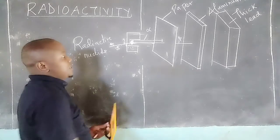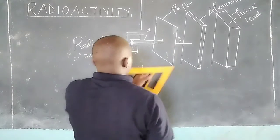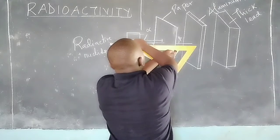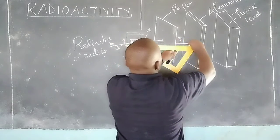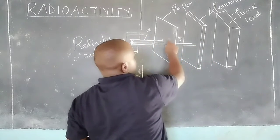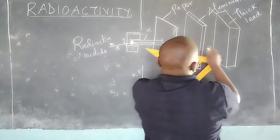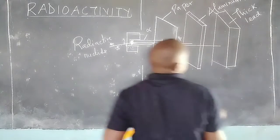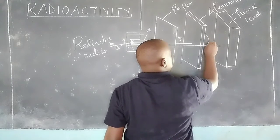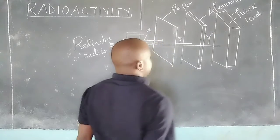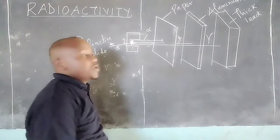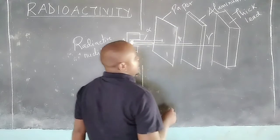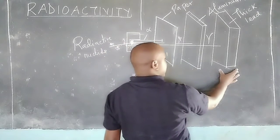Then finally we have the ones which have the highest energy, and we call them gamma radiations. Gamma radiations can go through matter — they can penetrate a sheet of paper, can penetrate thin aluminium, until they reach a thick block. Gamma radiations have the highest penetration power and get blocked by a thick lead block.